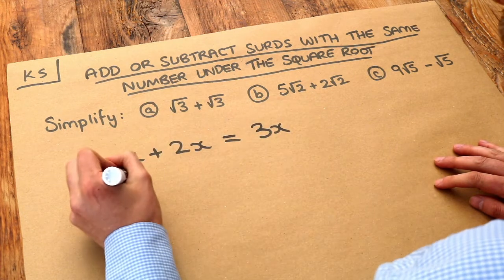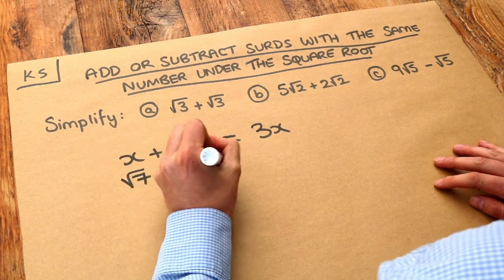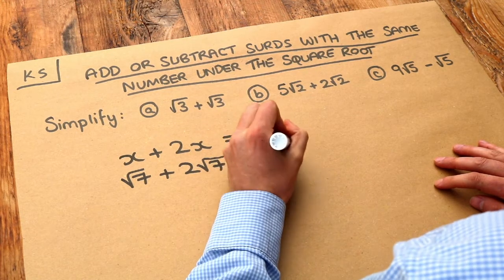of surds. If for example I had root 7 and I added two lots of root 7, then I would get three lots of root 7.